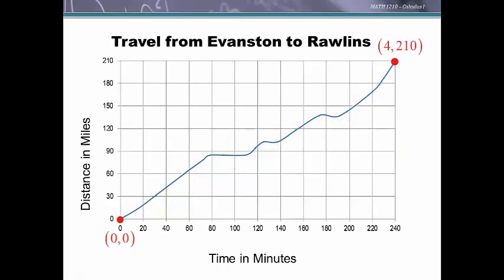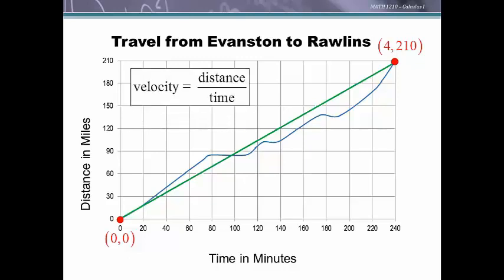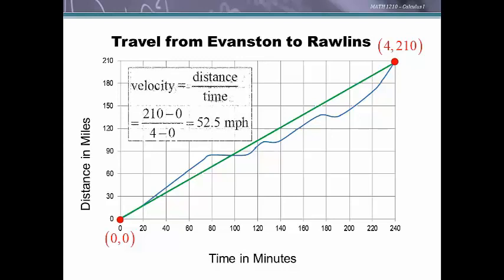Point (0, 0) is Evanston and point (4, 210) is Rollins. The horizontal axis is in minutes and the vertical axis is distance in miles; velocity is in miles per hour rather than miles per minute. Connecting these two endpoints gives a secant line — a line joining any two points on a curve. Velocity is distance over time, which corresponds to the slope of this line: y₂ minus y₁ over x₂ minus x₁. So 210 minus 0 over 4 minus 0 gives our average velocity.